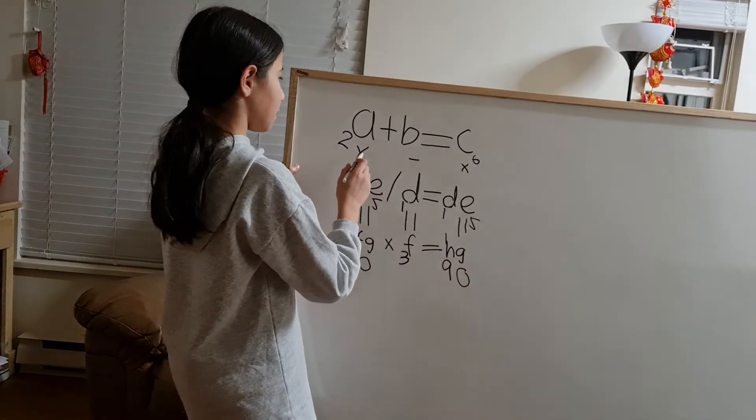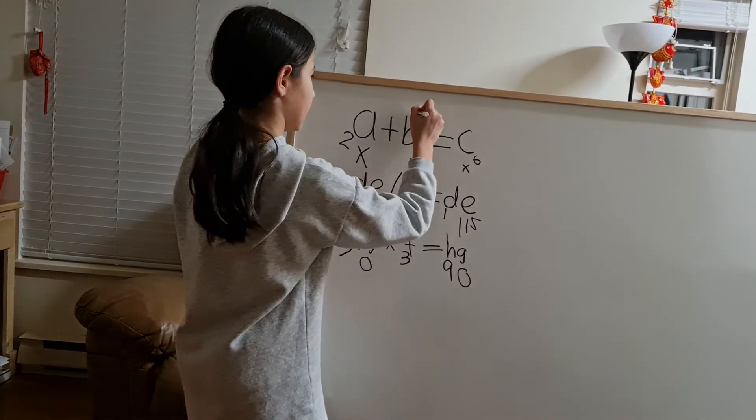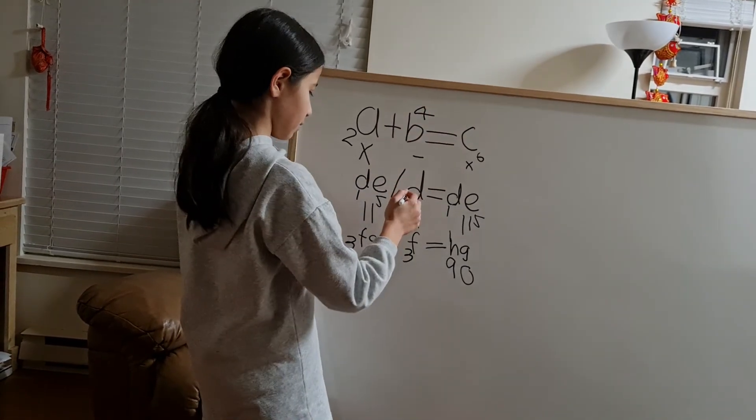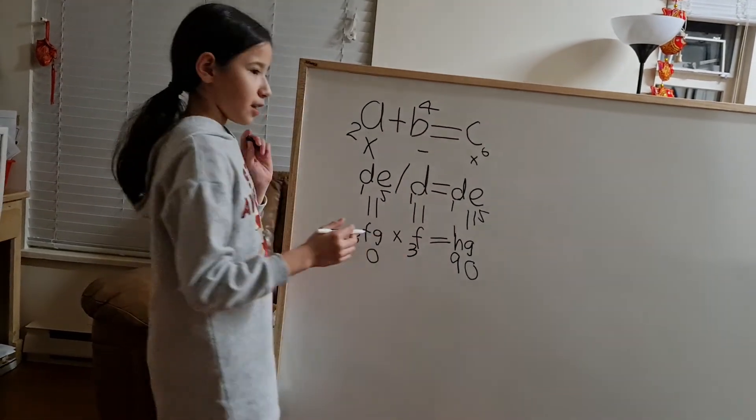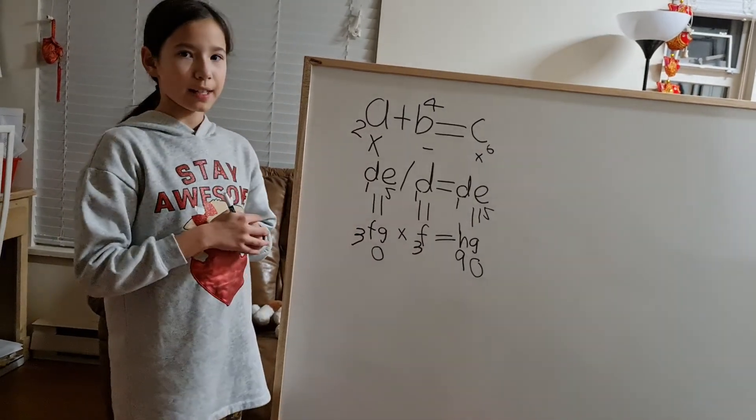So 2 plus something is equal to 6. So B is 4. And 4 minus 1 is equal to 3. So all the equations are correct and I solved the puzzle.